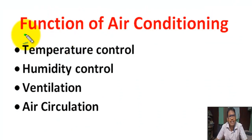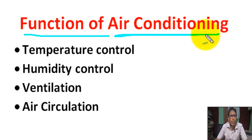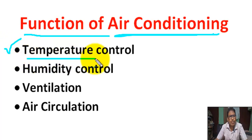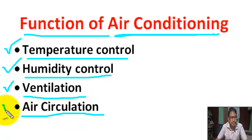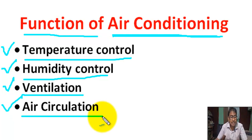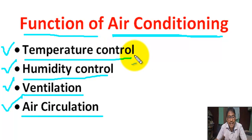What is the function of air conditioning? The functions of air conditioning include temperature control, humidity control, ventilation and air circulation.